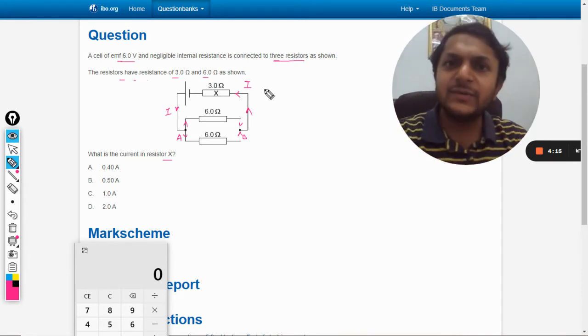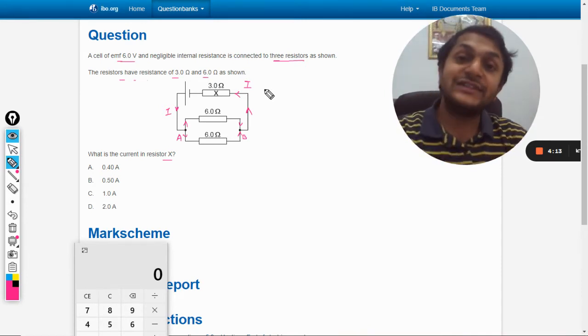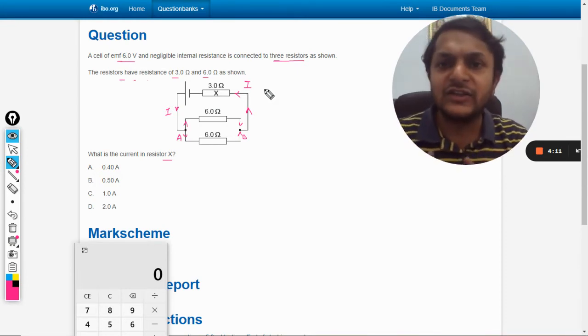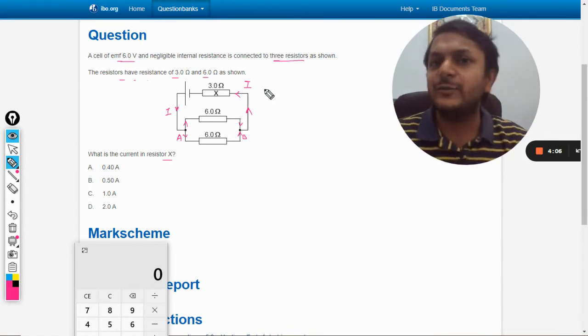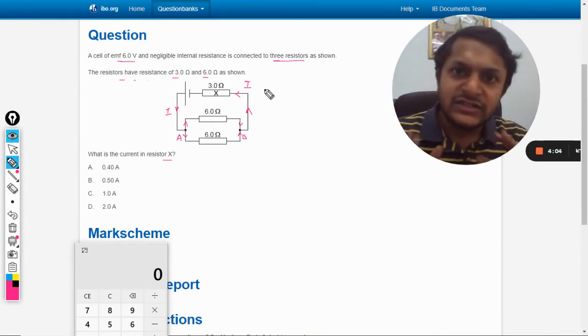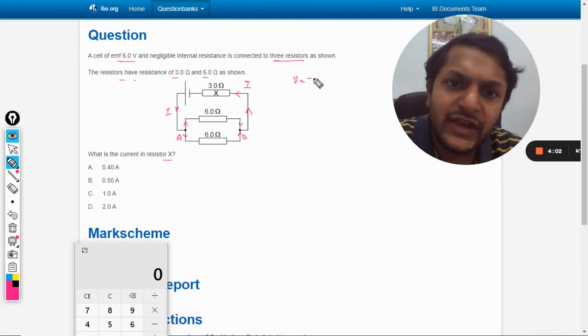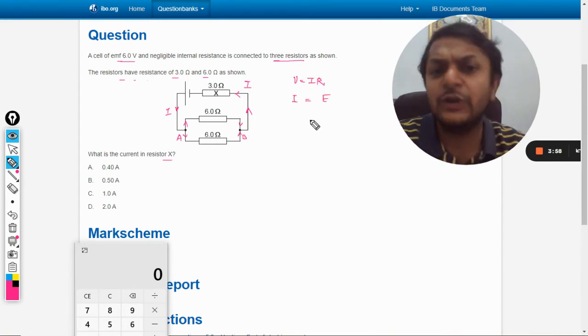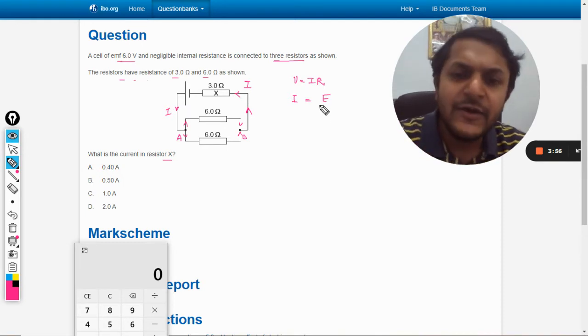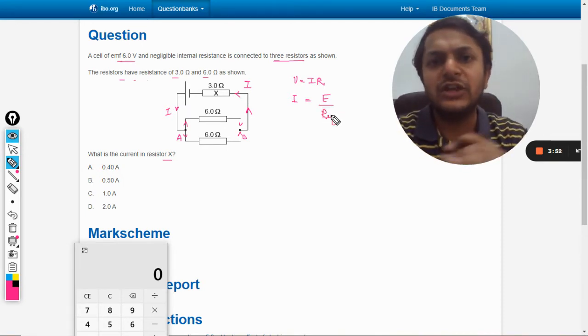The total current I which started initially from the battery is passing through X. So if they say that you need to find the current passing through resistance X, it means we need to find the total current passing through the circuit. Simply we will do V equals IR, so I can say that I is equal to, instead of V I will write E, the EMF, divided by R equivalent.